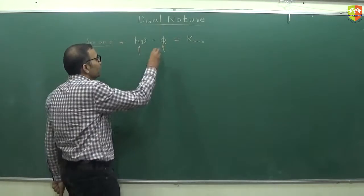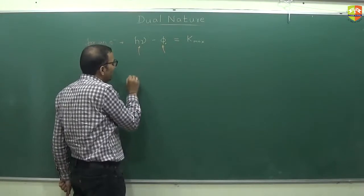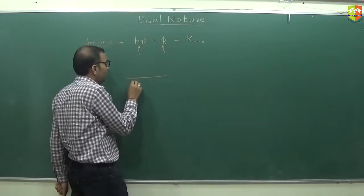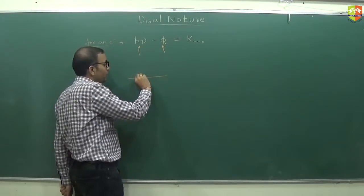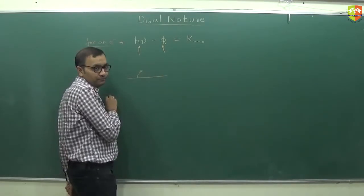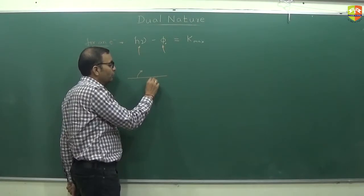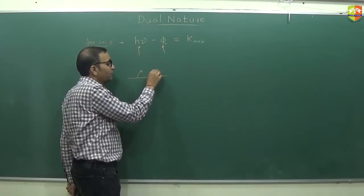I mean in a metal surface, there will be different kinds of electrons. Those will be directly on the surface, they will be able to come out the most easily. Those slightly below, they will be able to come out with slightly greater difficulty.